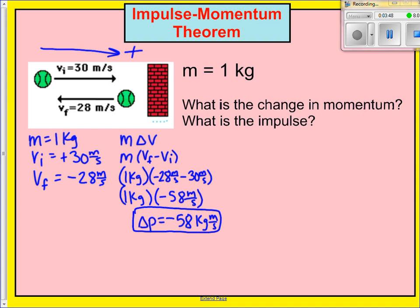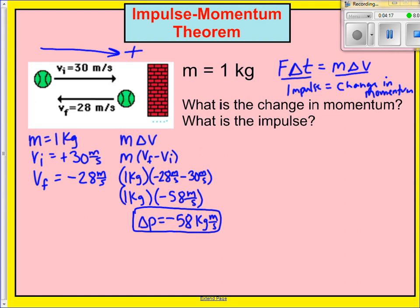The second question asks what is the impulse. This is kind of a trick question because, if you remember, the impulse-momentum theorem states that impulse — which is force times delta T — is equal to M times delta V. We already solved for that, and since they're equal to each other, impulse is always equal to the change in momentum. So if my change in momentum is negative 58, my impulse is also negative 58. The units of impulse would be Newton seconds, since force is in Newtons and time is in seconds.